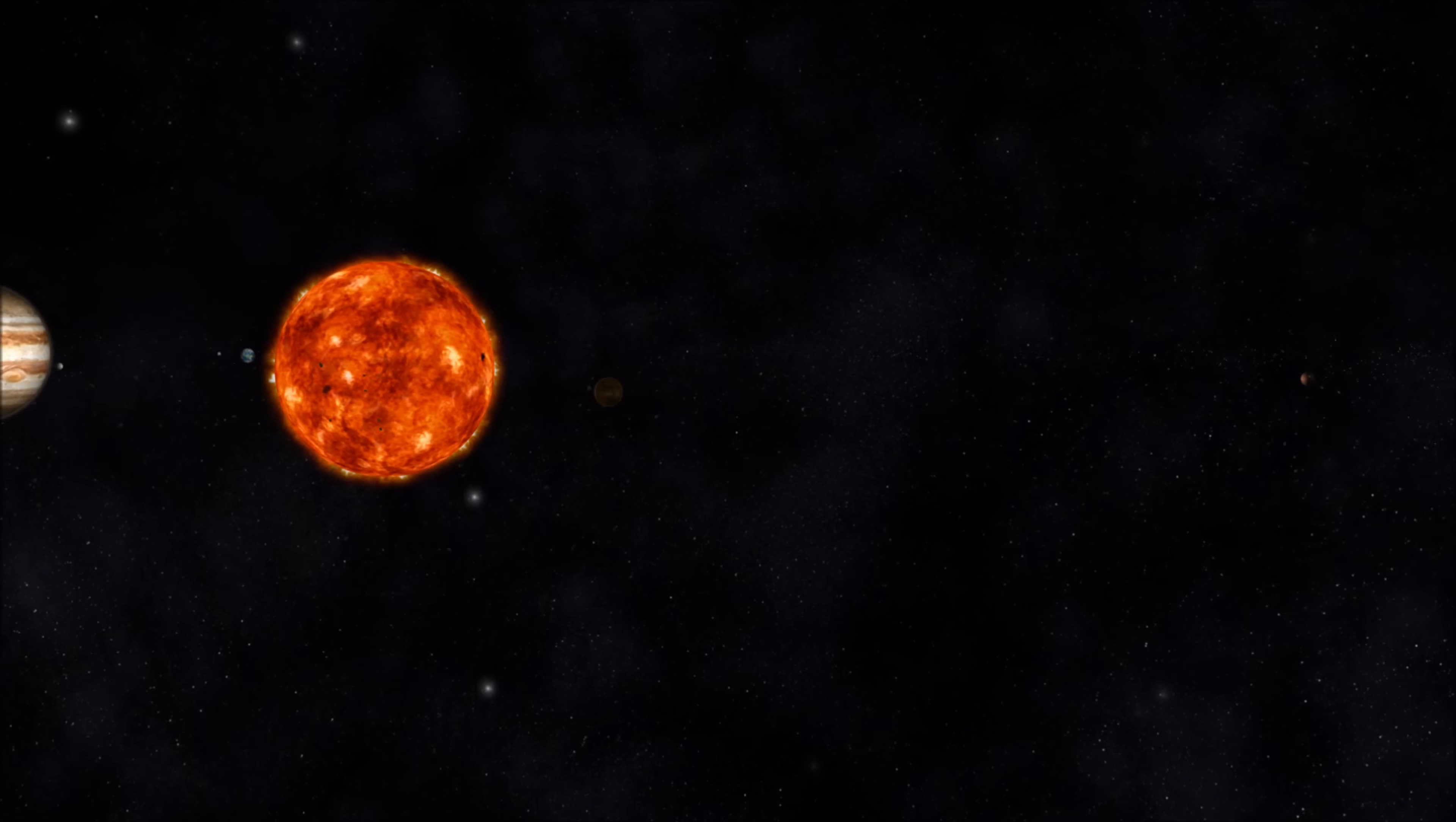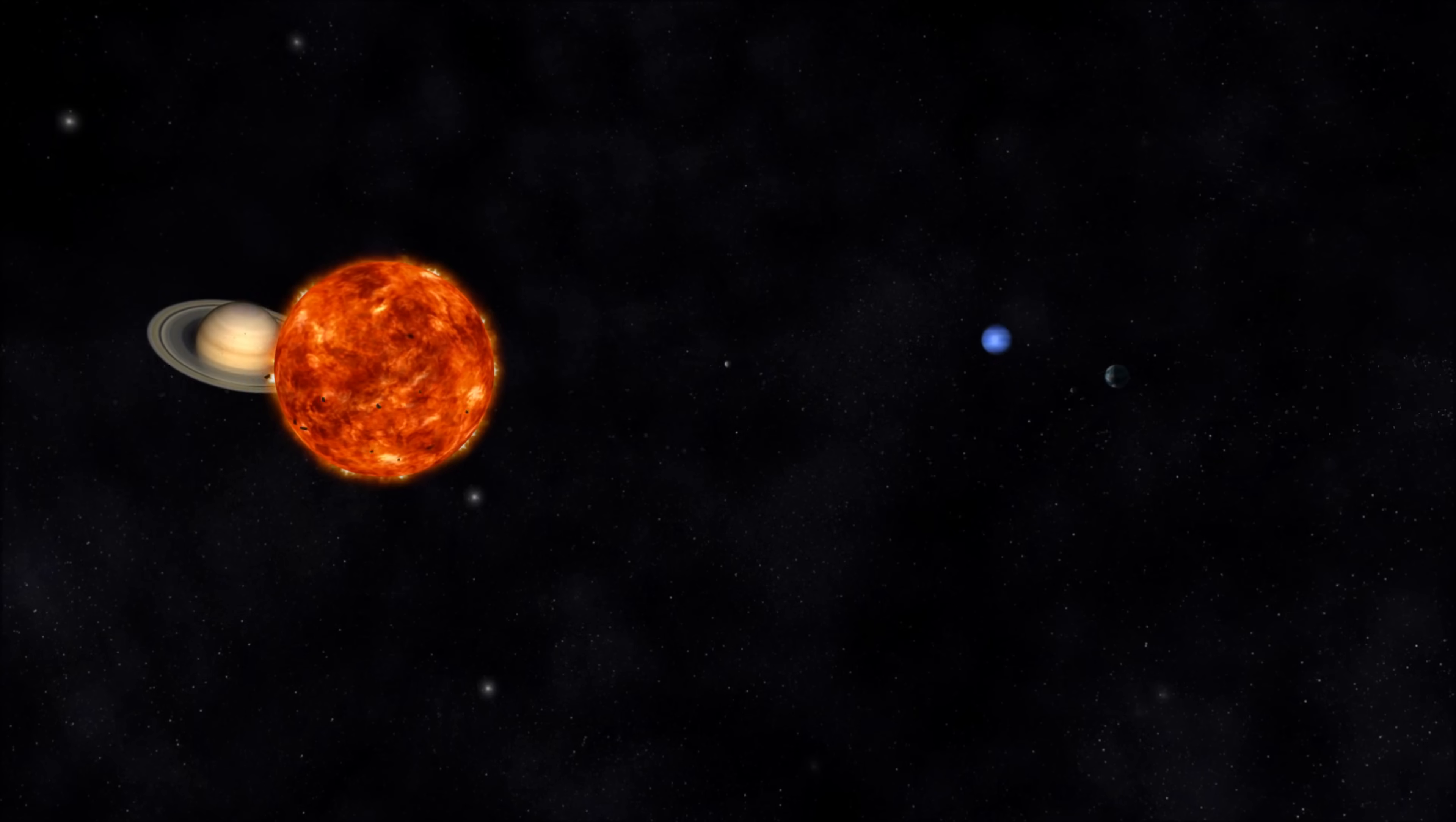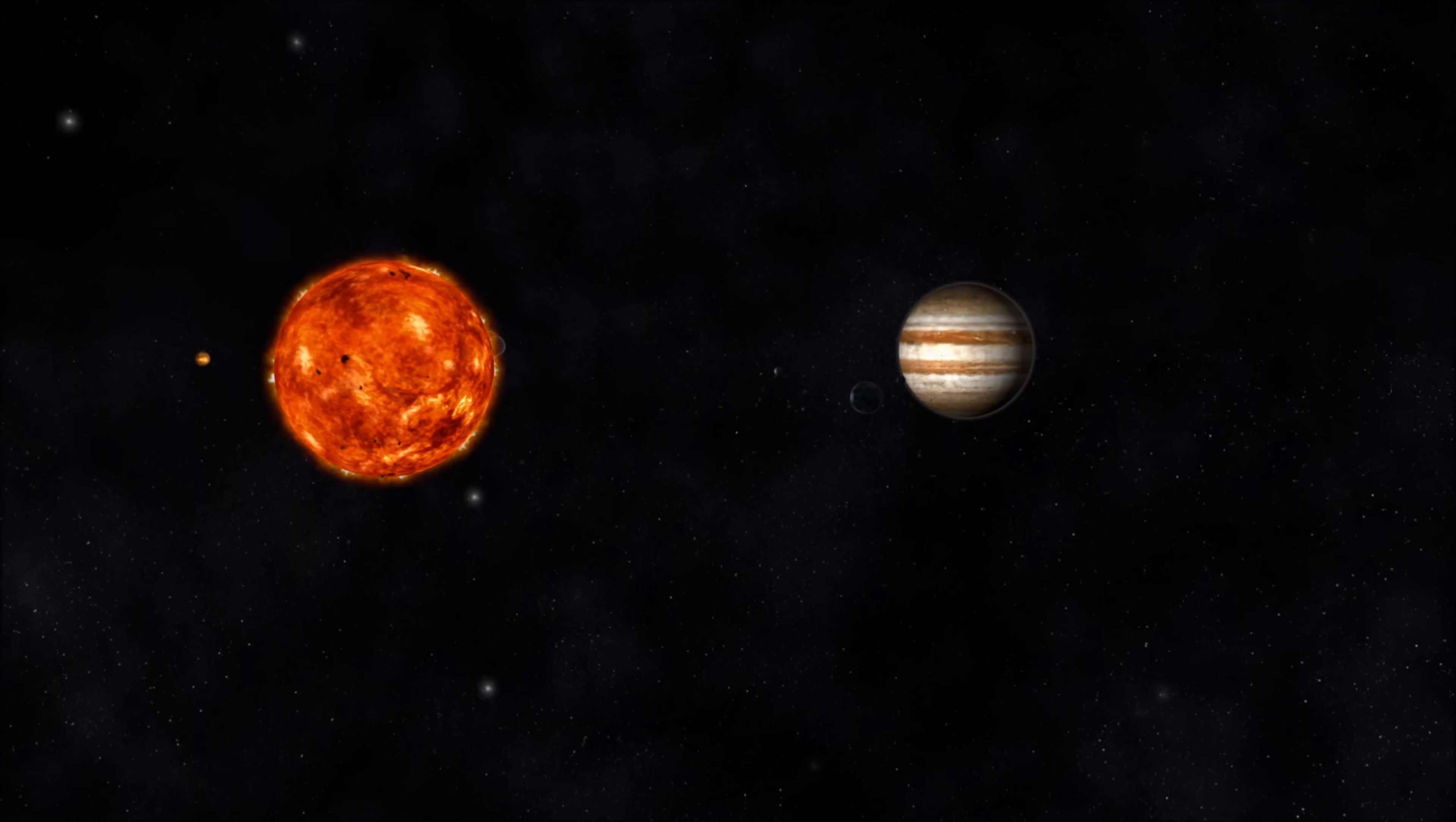So you now know that you can describe our solar system as a very large neighborhood in space. It's made up of many interesting neighbors including the sun, eight planets, their moons, dwarf planets, asteroids, meteors, and comets. Our solar system is only one of many planetary systems in the universe and it's a great place in the universe to live.